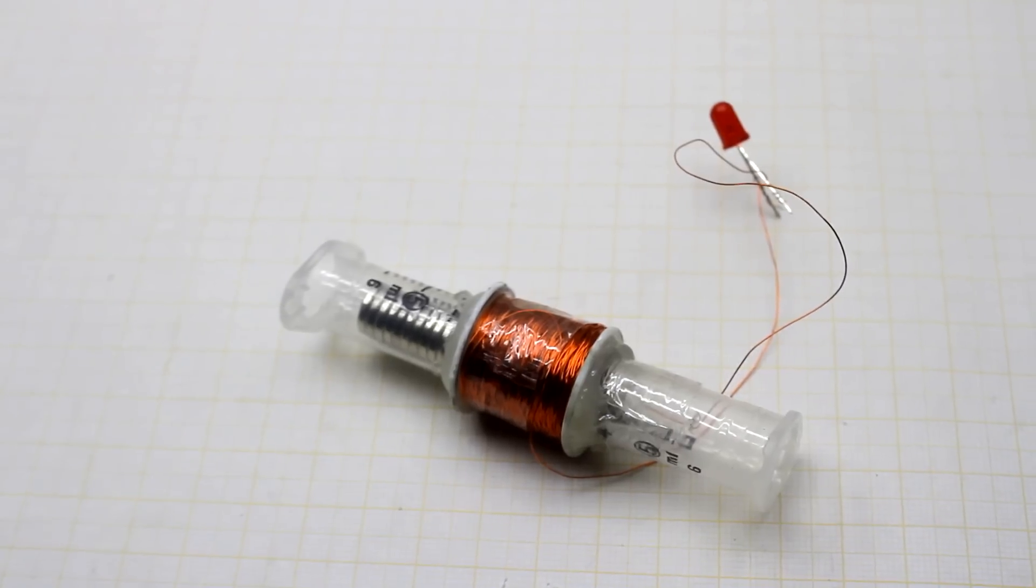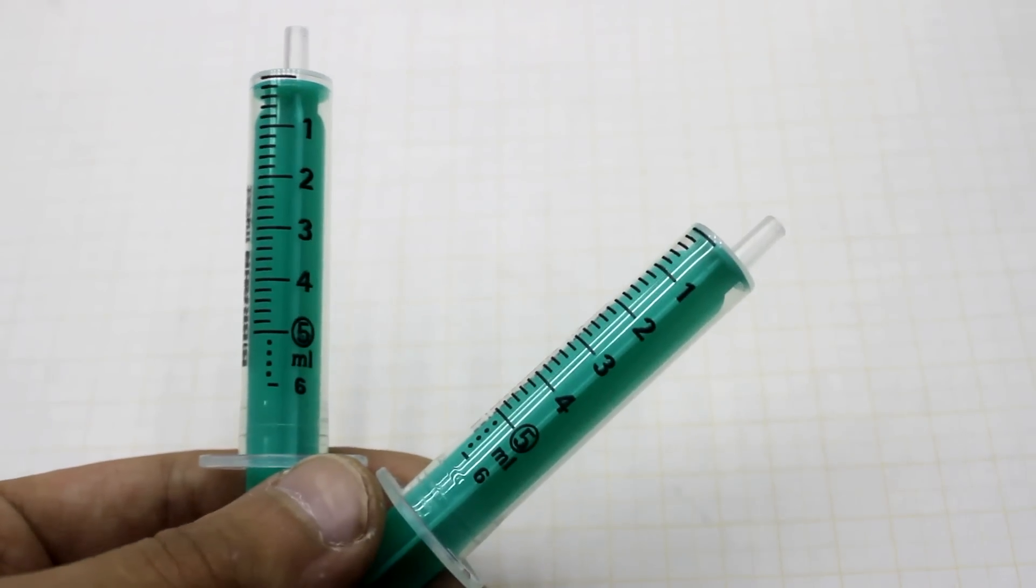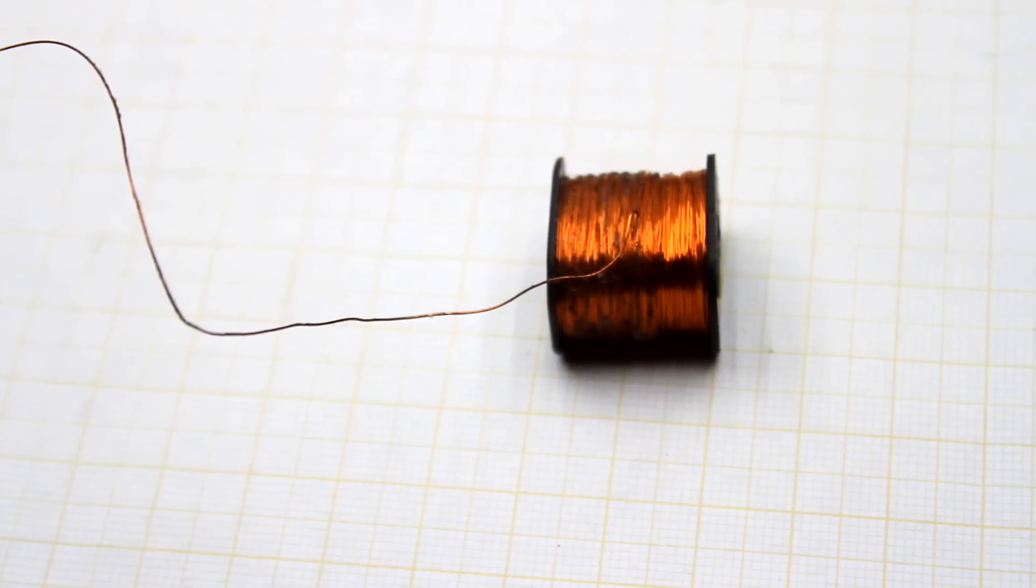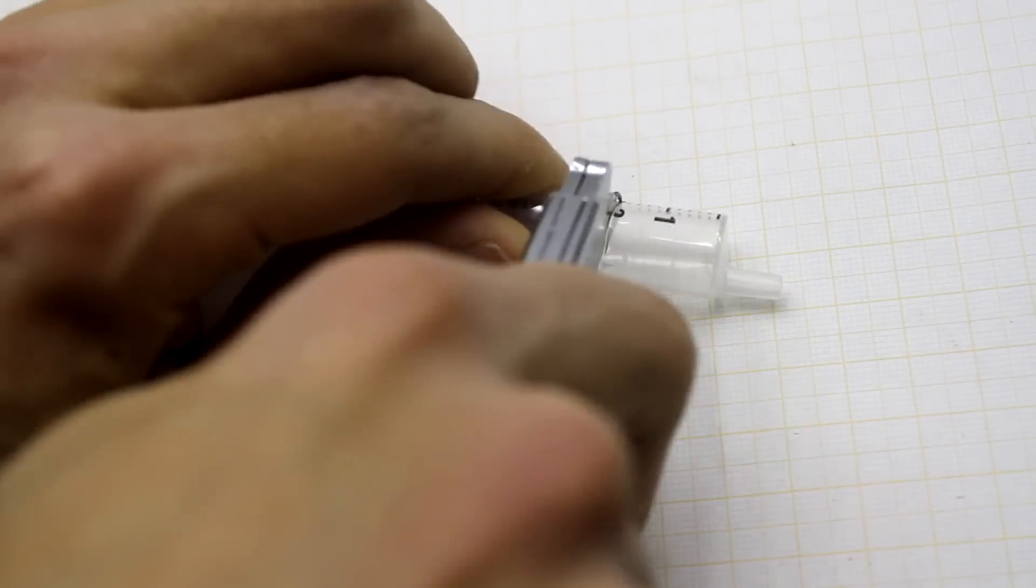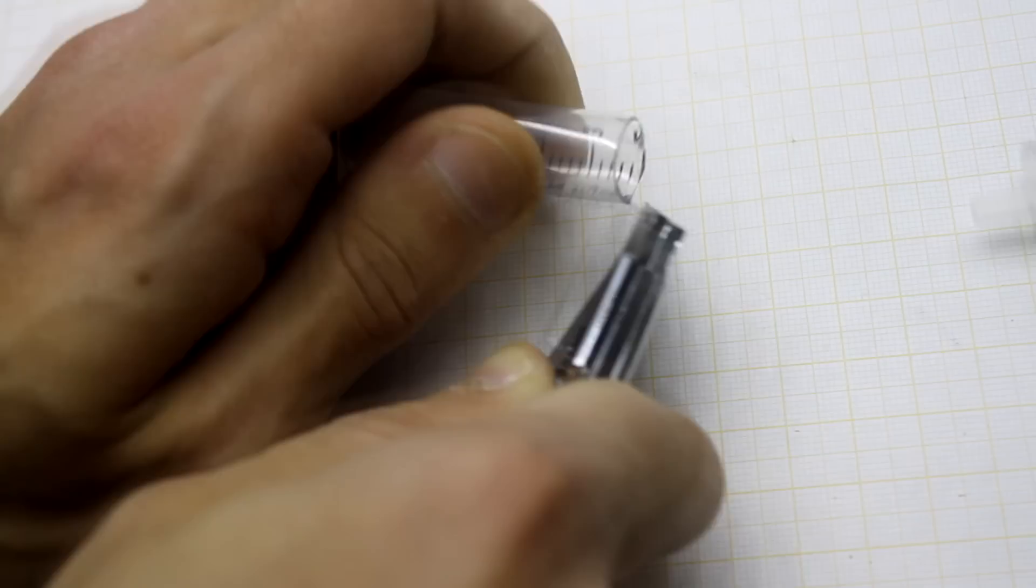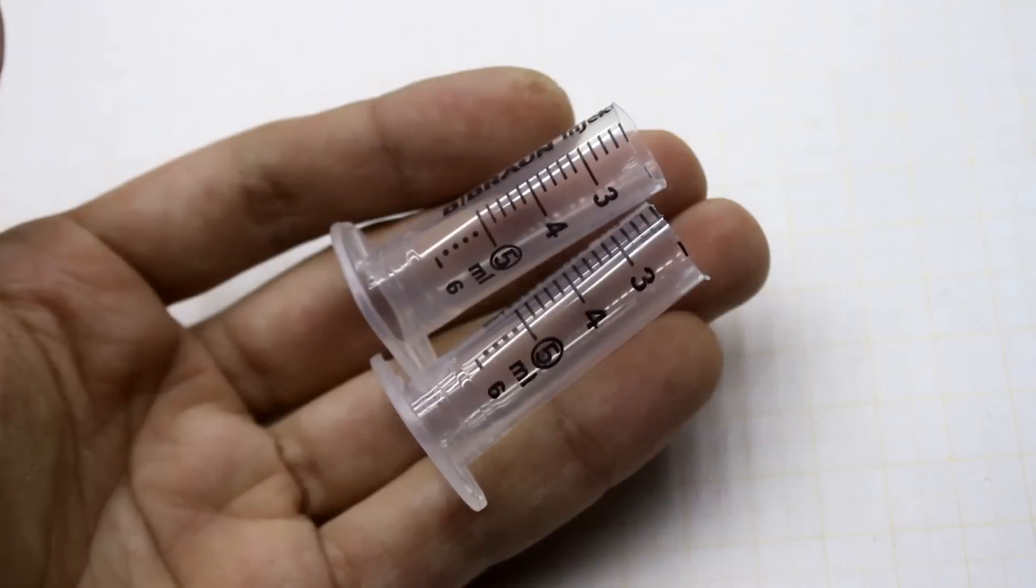To assemble the generator, we need a pair of 5 ml syringes, preferably with a rubber piston, and a coupe wire with a diameter of 0.1 to 0.3 mm. Syringes you will cut as shown in the video. Then they must be glued or connected by adhesive tape.